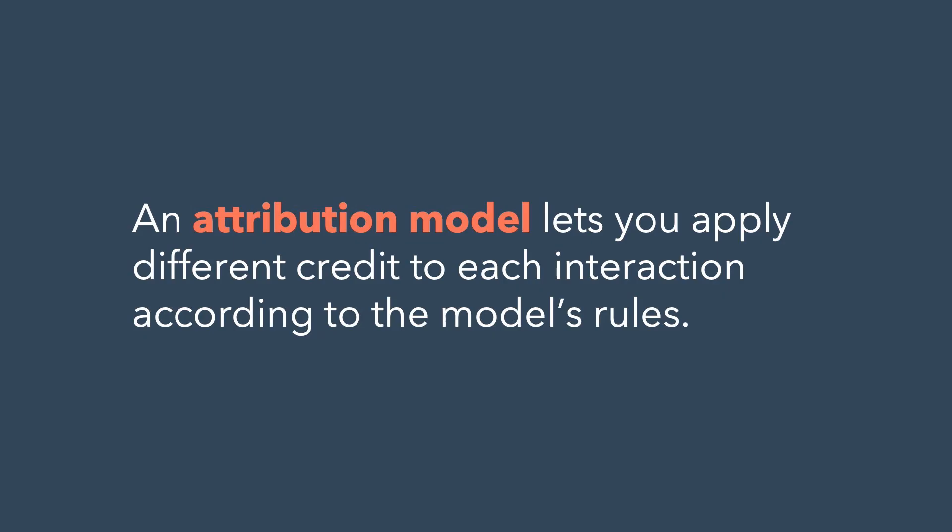An attribution model lets you apply different credit to each interaction according to the model's rules. For example, some models apply all credit to the first or last interaction in someone's journey, while others use mathematical rules to weigh credit throughout.